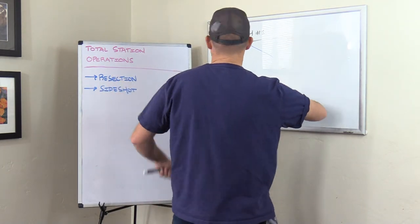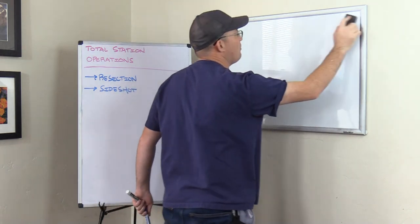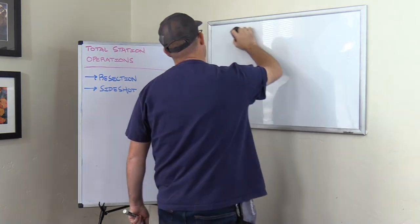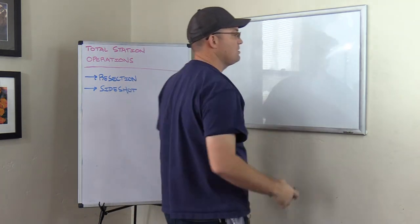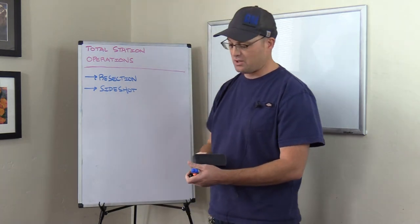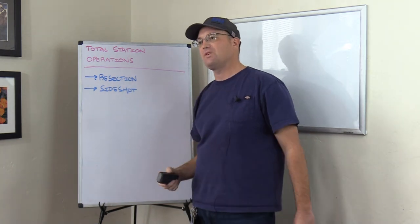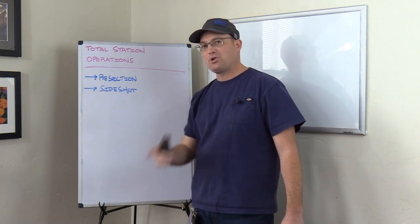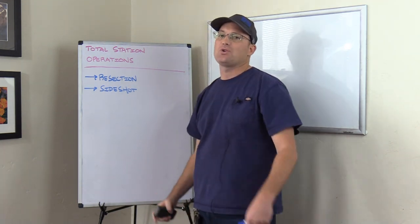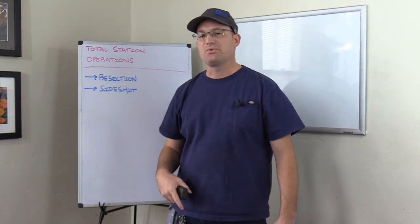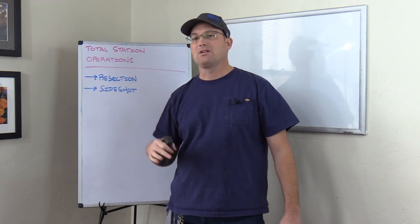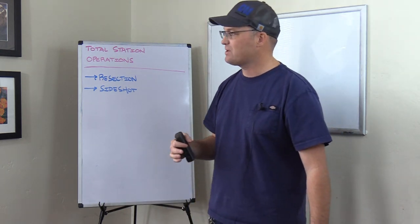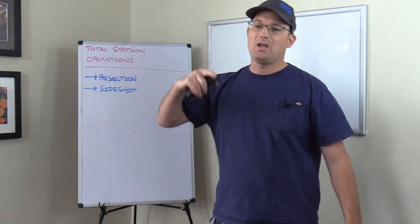So that was resection and side shot operations with the total station. I think I've only got one or two more operations I want to teach you with total stations — laying out grid lines and pushing a line out with the total station. We'll also do another video on what field notes for a total station survey should look like. If you're on YouTube, hit the subscribe button if you like these videos. We'll do some more Field Survey Friday videos — leveling, digital leveling, traditional leveling, and GPS. Thanks for watching.